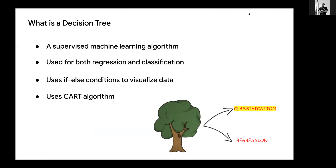A decision tree is a supervised machine learning algorithm used for both regression and classification problems. It uses if-else conditions to visualize data — that algorithm is classification and regression trees (CART). As opposed to unsupervised learning where we do not need an output variable, whenever we make a decision tree, we require an output variable.